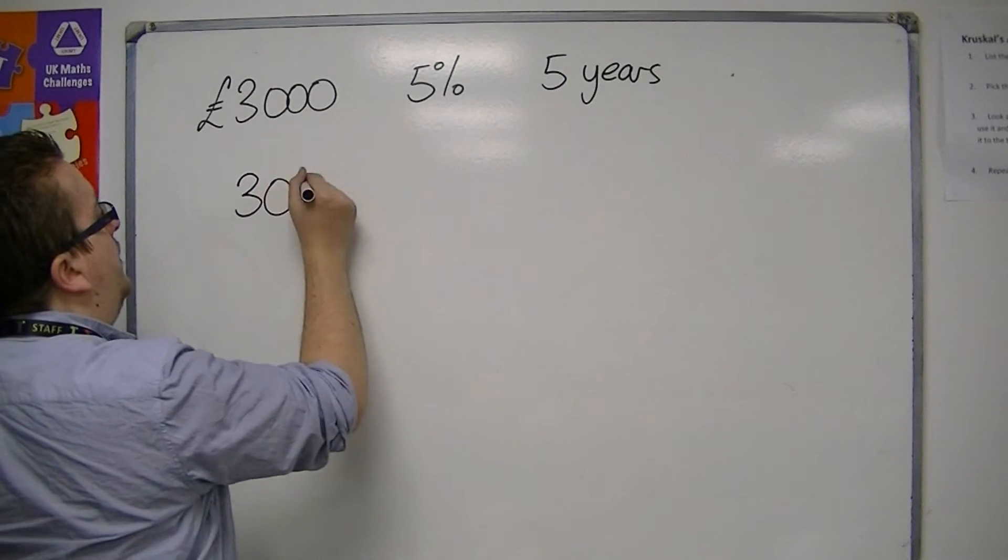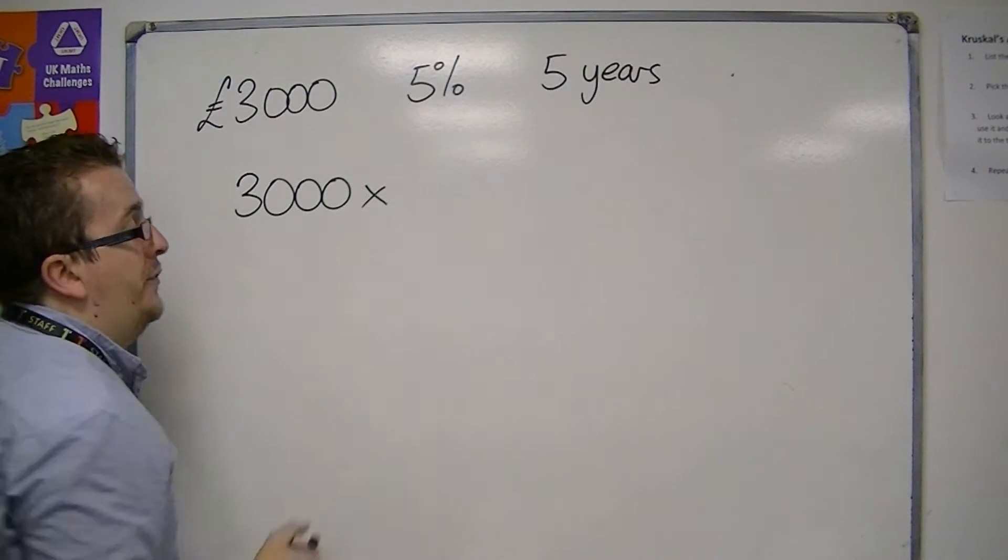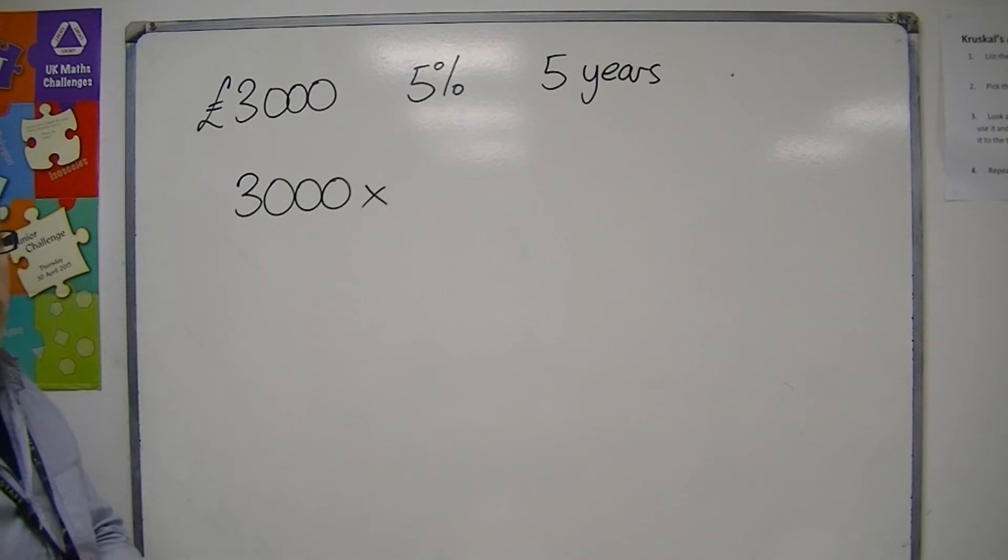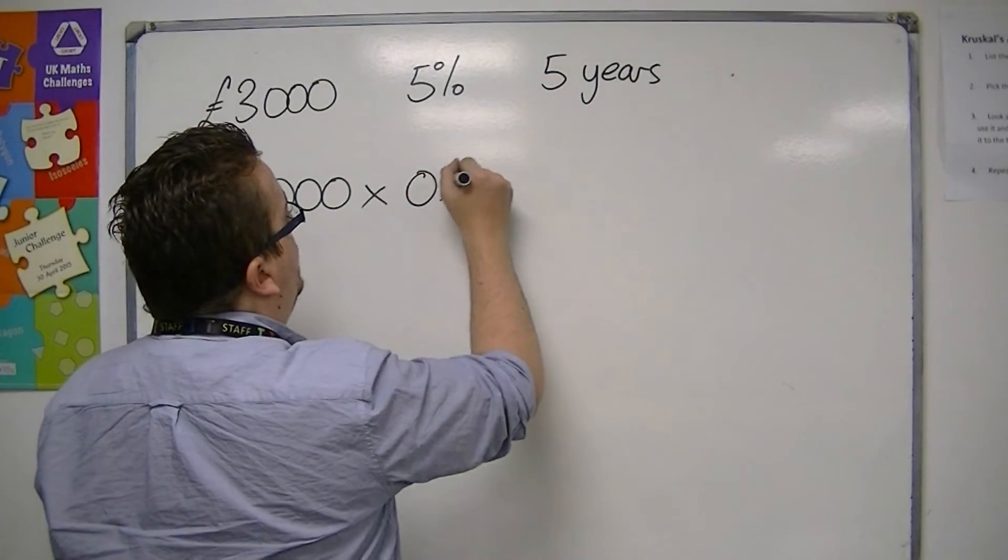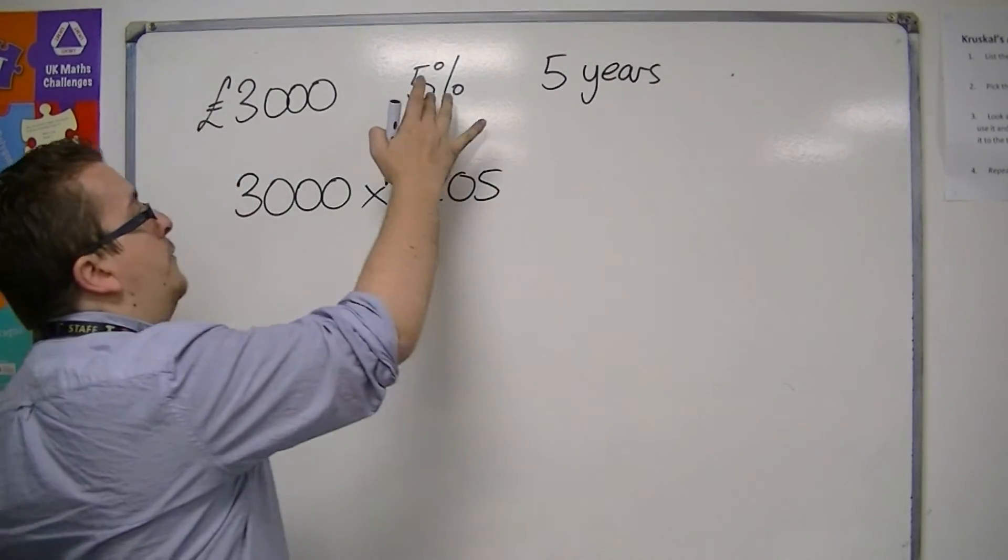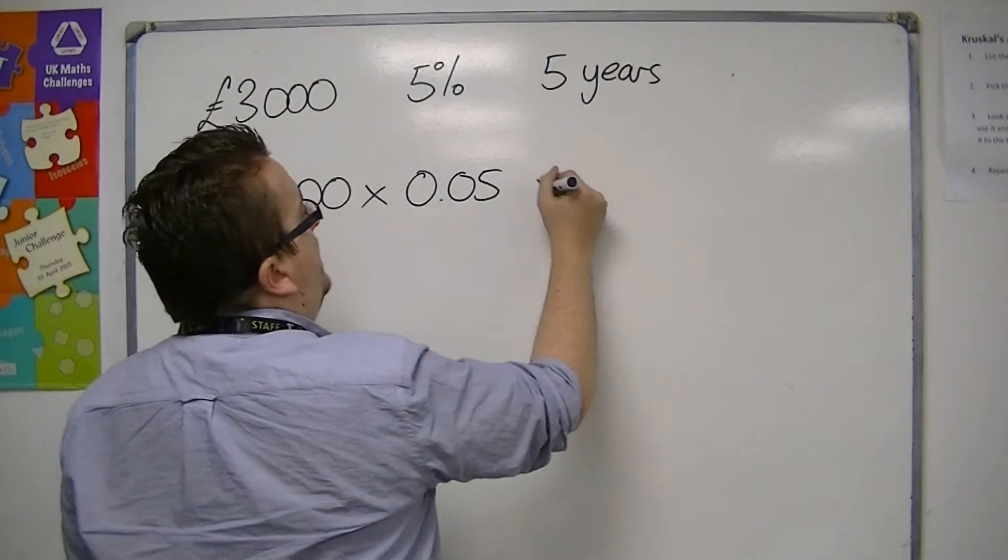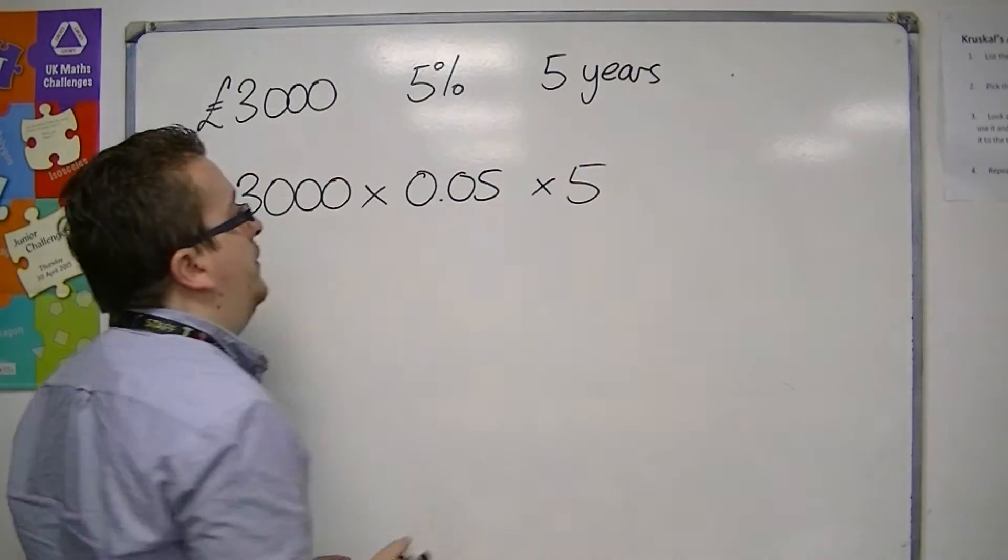I multiply the amount by the percentage, the actual interest percentage as a decimal, which is 0.05, going from percentage to decimal, and then by the number of years, so 5.